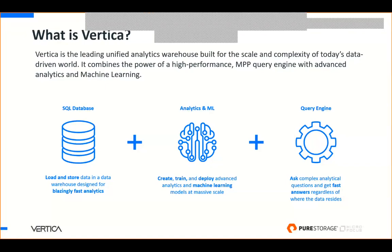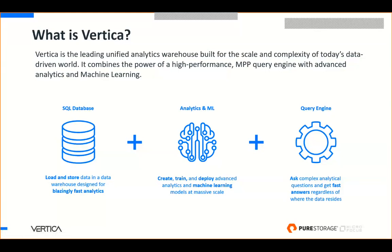A very quick overview on Vertica: it's a unified analytics warehouse. Our customers choose us largely based on high performance at scale. Vertica is three things: it's a SQL database, a SQL data warehouse where you can load and store very large volumes of data for really fast analytics. It's a column store and a massively parallel processing system. The biggest area of interest these days is within analytics and machine learning, and we've made a major investment in this part of the platform.